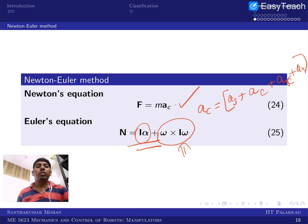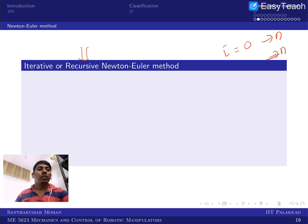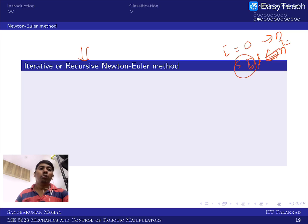This is a recursive or iterative method. We start at i equal to 0 and go to n in the forward pass, then start at n and come back to 0 or 1 in the backward pass. If we want only the first joint force and torque we can stop at i equal to 1; if we want the base forces we continue back to 0.